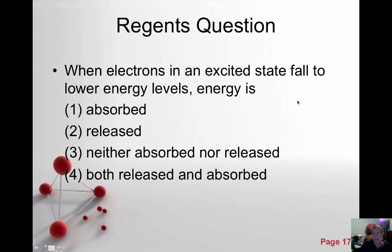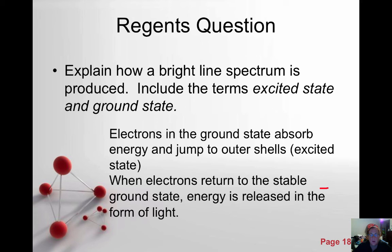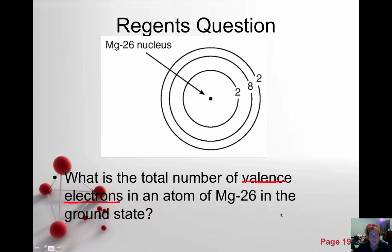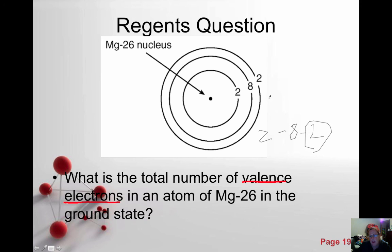When electrons in an excited state fall to lower energy levels, energy is released. We absorb energy as electrons move outward to the excited state, and when they come back in, they release the energy in the form of light. Electrons in the ground state absorb energy and jump to outer shells — this is the excited state. When they return to their stable ground state, energy is released in the form of light. What is the total number of valence electrons in an atom of magnesium-26 in the ground state? The electron configuration is 2, 8, 2. Valence electrons are in the outermost shell, so the answer is two.